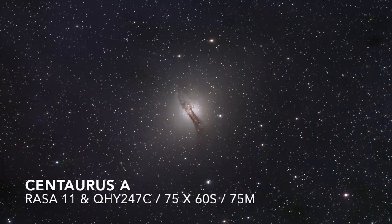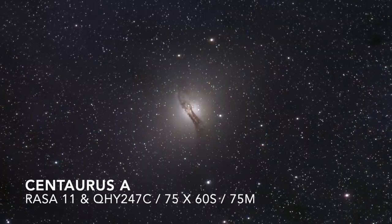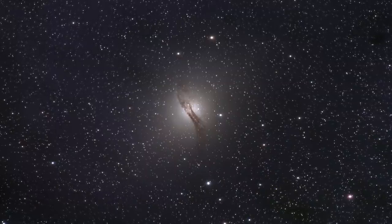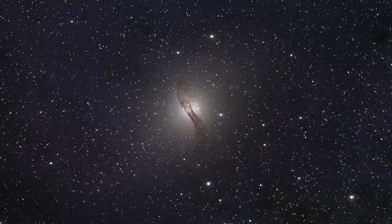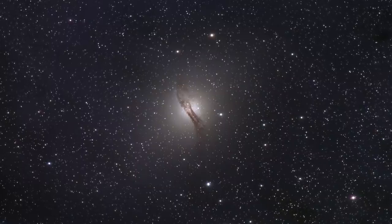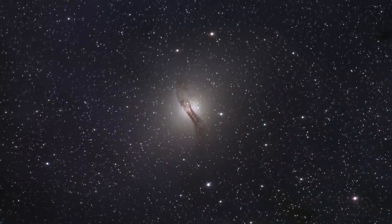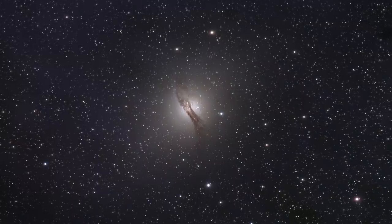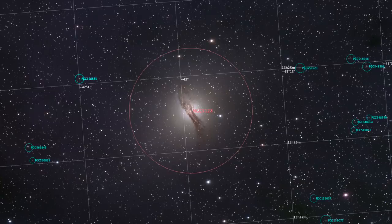The other galaxy I recently took was Centaurus A. Again, this was super quick, using the Celestron Rasa 11. 75 minutes of integration, one-minute subs. Quickly knocked this over with the one-shot color camera, and it turned out pretty good, I reckon. There's a lot of detail in there, even though the field was really, really wide, and this is a smaller galaxy. I was able to expose a lot of the outer detail, which you don't normally see in images of this galaxy.